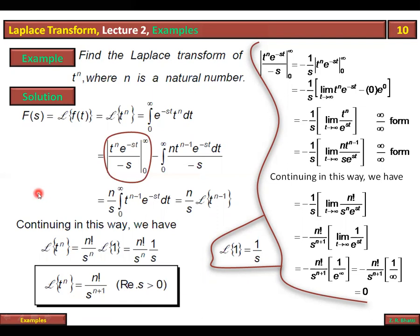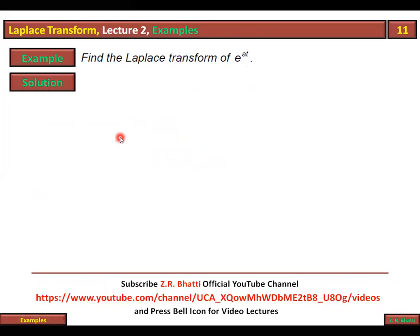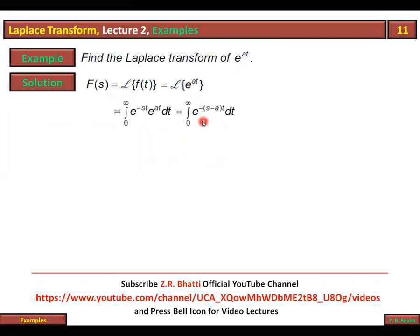Next example: calculate the Laplace transform of e^(at). We treat this as a formula. f(s) = Laplace transform of f(t). Laplace transform of e^(at) by the formula: 0 to infinity e^(-st) × e^(at) dt. Taking negative sign common: e^(-(s-a)t). Taking the negative sign common is necessary here, so we have e^(-(s-a)t).